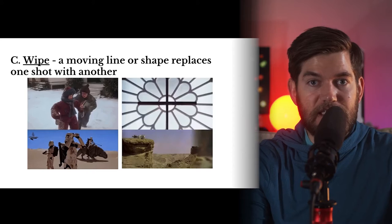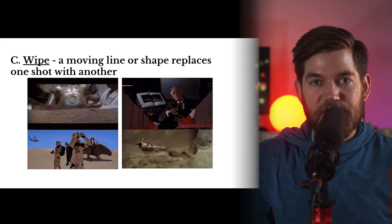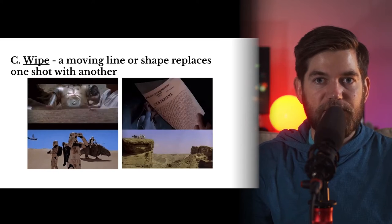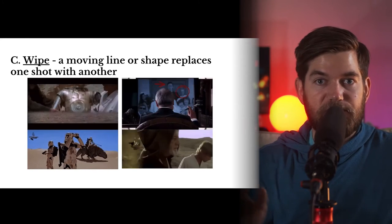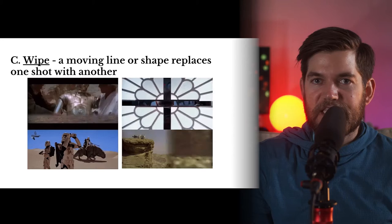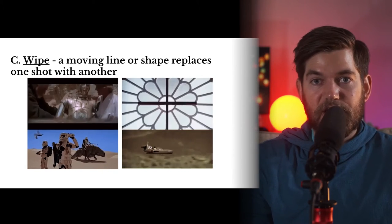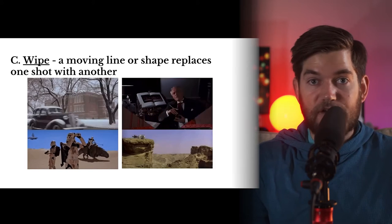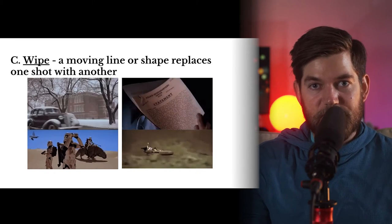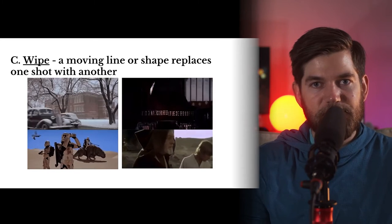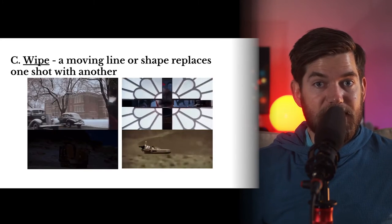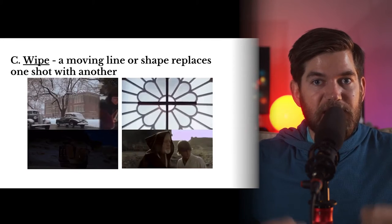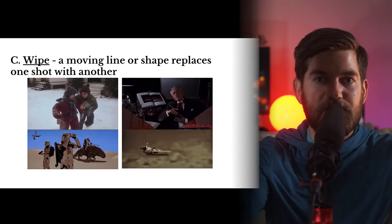Another transition that's been around for a long time is the wipe, but it's less popular today than when it was first created. A wipe uses a moving line or shape to change from one shot to another. Wipes are still popular in the Star Wars movies — it's part of the Star Wars editing process to use wipes transitioning from one scene to another. But there aren't many modern movies that still use visible wipes. In the top left example from A Christmas Story, you can see the wipe follows the children as they move from left to right. It's common for a wipe to follow movement in the shot, adding energy to the transition. In the Star Wars example, when C-3PO is lifted up, the wipe goes from the bottom of the screen upward with him.